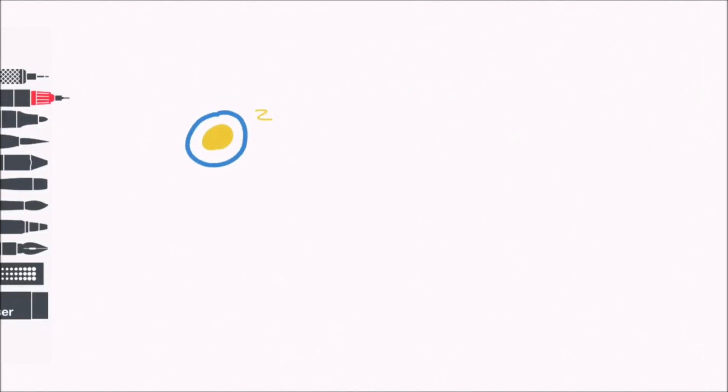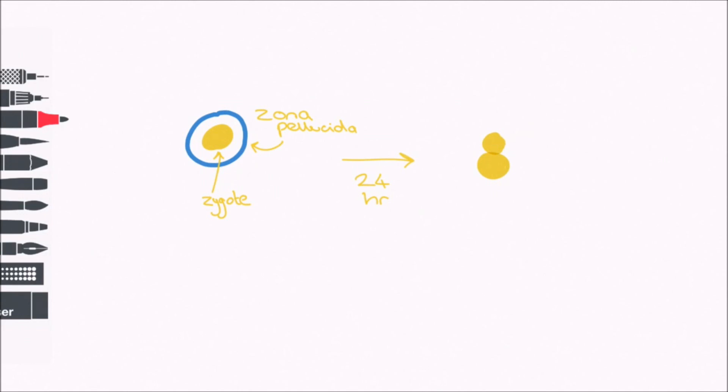So let's begin the moment after the formation of the zygote. Here we have the zygote, still encapsulated by the zona pellucida, which is the glycoprotein layer that surrounds it. About 24 hours after fertilization, the first division occurs. The zygote divides to form two cells and these cells are called blastomeres.